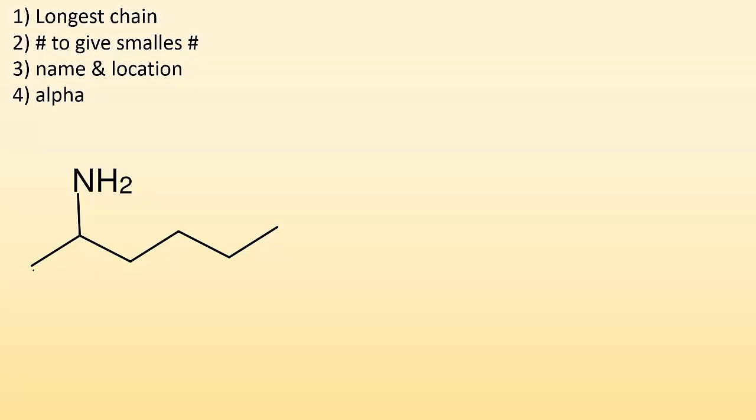Okay, what about this one? Well, I got one, two, three, four, five, six carbons. So, hex, single bond, and an amine group, hexanamine. Now, do I need a number? Yeah, because there's six carbons. It could be on any one of these, and it'd be different. So, I got to number it. So, I'm going to number it left to right, because it's going to give me the lowest number. So, this will be 2-hexanamine.